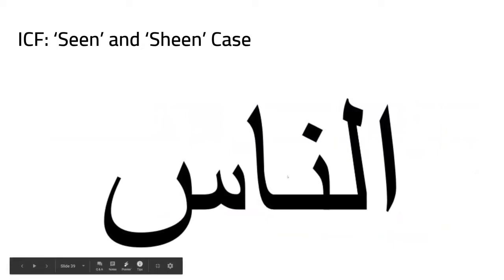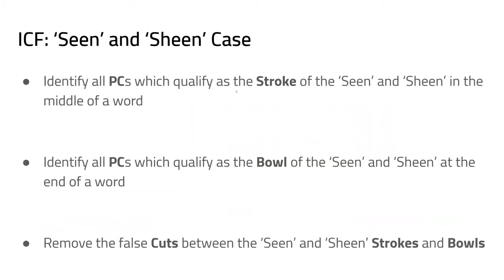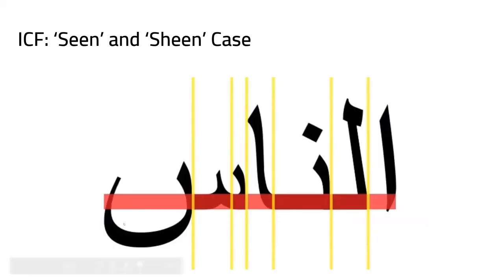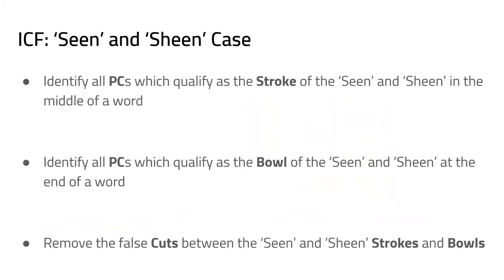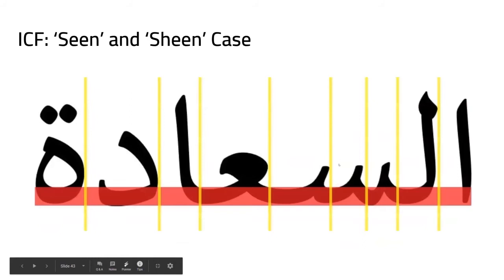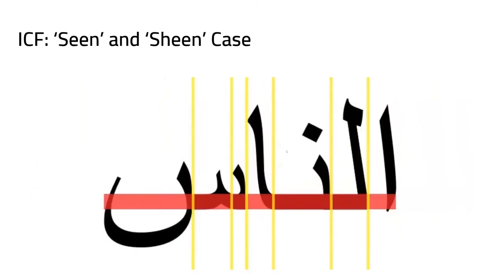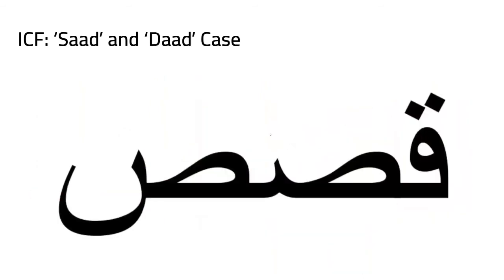In the Sin and Shin case, the Sin at the end of a word has a quite different shape. The algorithm identifies what qualifies as a Sin stroke versus a ball — the last part of the Sin is a ball. Whenever the algorithm detects three successive Sin strokes, or two Sin strokes followed by a ball, it removes the two excessive cuts. This handles both positions of the Sin character.